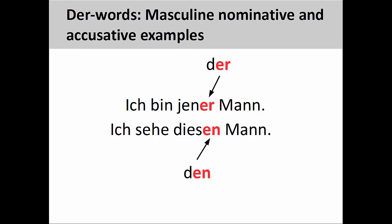Let's walk through a few examples now, starting first with the masculine forms. In the first sentence, ich bin jener Mann (I am that man), it is easy to see that the -er ending on jen- resembles the masculine definite article in the nominative case. In the sentence right below, ich sehe diesen Mann (I see this man), the -en ending on dies- looks like the masculine definite article in the accusative case.